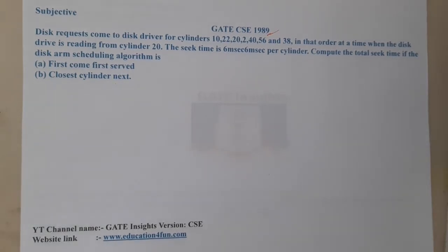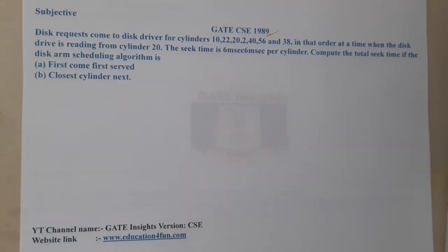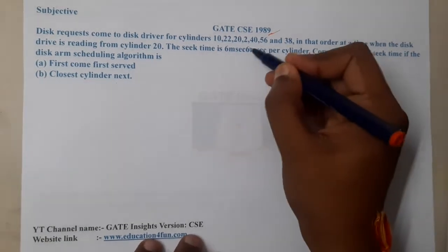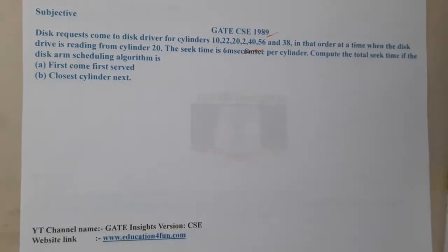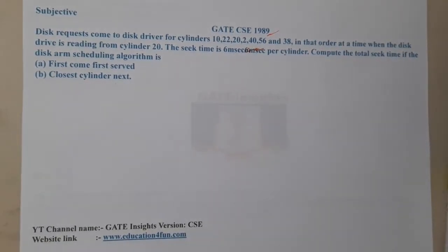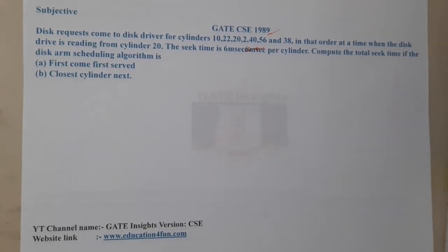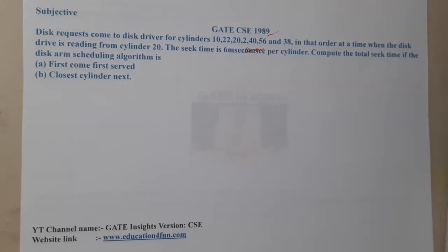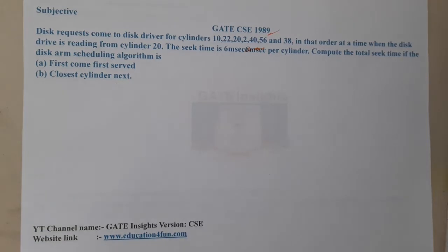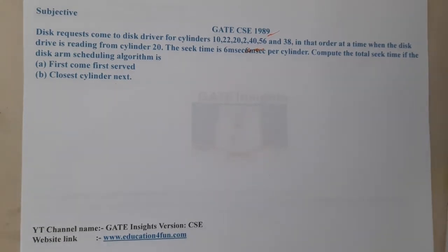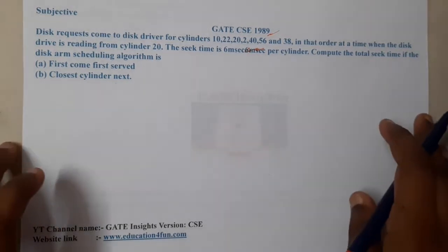At the time the disc drive is reading cylinder 20, the seek time is 6 milliseconds per cylinder. They are asking us to compute the total seek time using two algorithms: First Come First Serve (FCFS) and Closest Cylinder First, which is the Shortest Seek Time First (SSTF) algorithm.